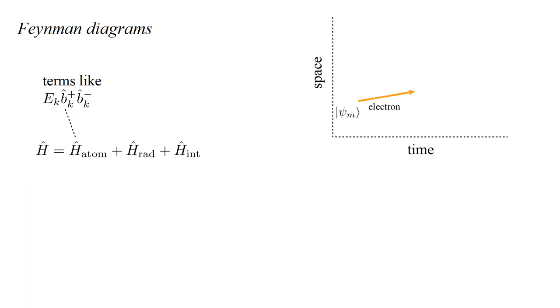Suppose the m-th orbital contains an electron. We represent this on a space-time diagram by an arrow labeled with the corresponding quantum state.